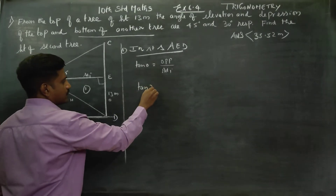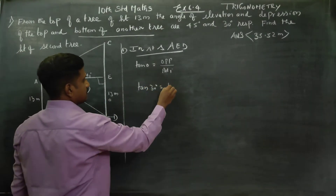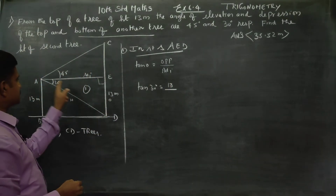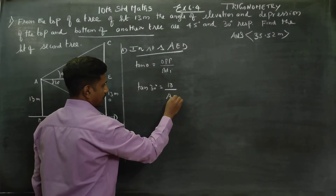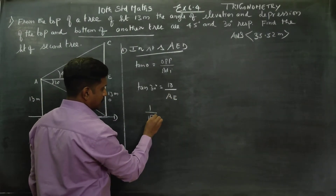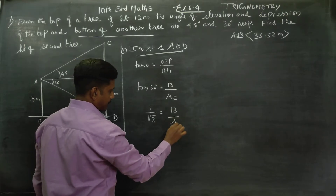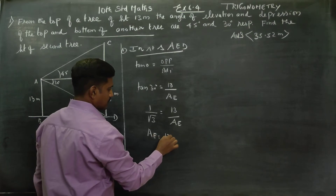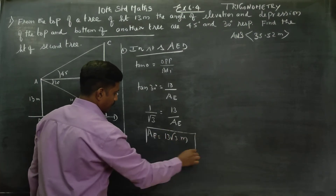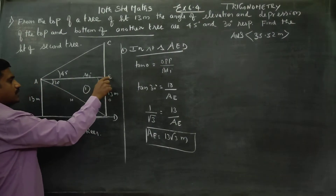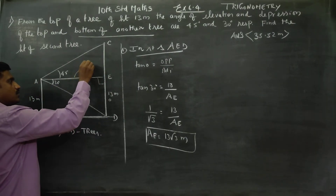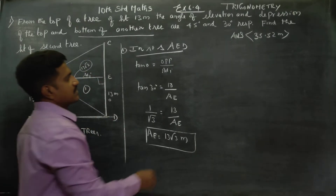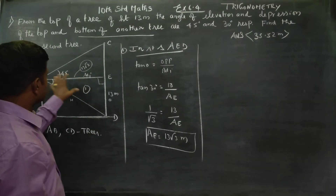Using 30 degrees, the opposite side is 13. So tan 30° = 13 / AED. Since tan 30° = 1/√3, we get 1/√3 = 13/AED. Cross multiplying, AED is equal to 13√3 meters.